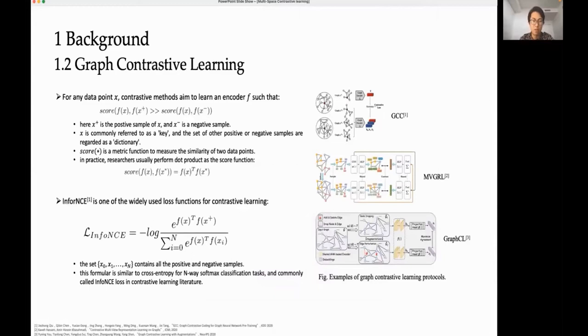To optimize for this property, we can construct a softmax classifier that classifies positive and negative samples correctly. InfoNCE is a widely used loss function to achieve such a goal.